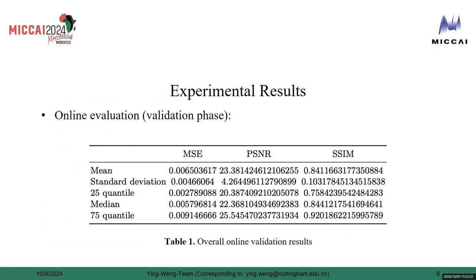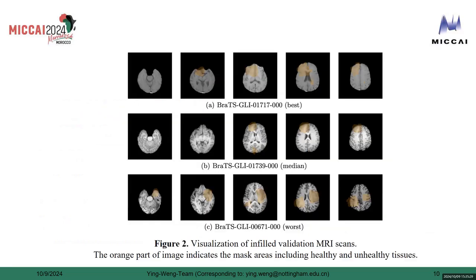Table 1 lists the overall online validation results. Table 2 shows a validation of infilled MRI scans. The orange part of the image indicates the mask areas including healthy and unhealthy tissues.